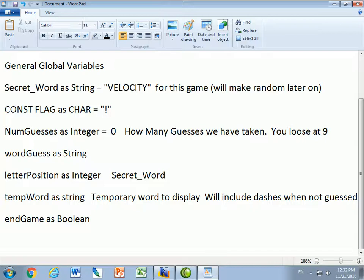If I go secret word dot substring, I'm going to use the letter position as a variable so it's going to maybe start at zero. Zero and zero would be right here in velocity the letter V and I'm going to check one character.